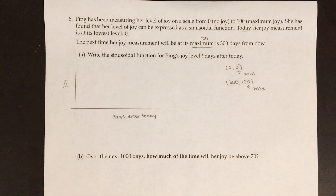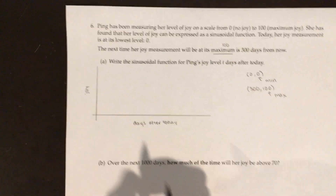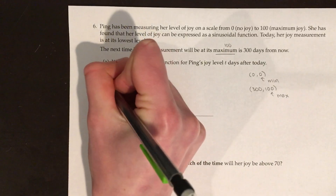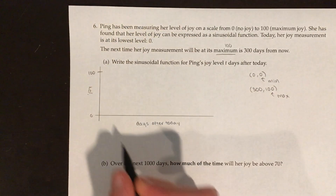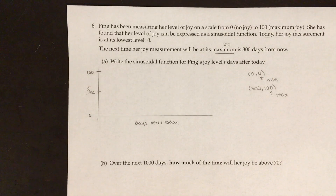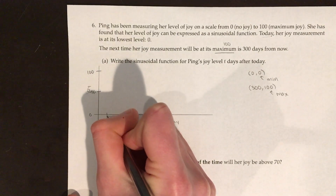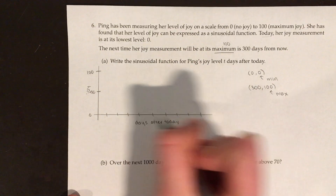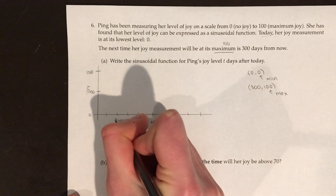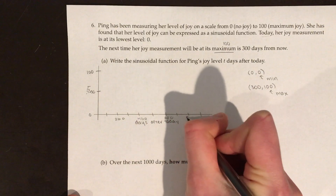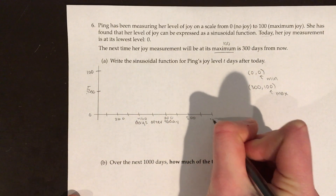When you're asked to write the sinusoidal function, it's always a good idea to make the graph. So I've made the graph over here. I'm going to label joy — zero is down here, and 100 is up here. You also need to label the halfway point, which is 50. For days from today, I'm going to go by hundreds: 200, 400, 600, 800, and the last one is 1000.